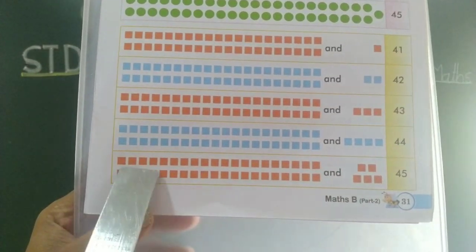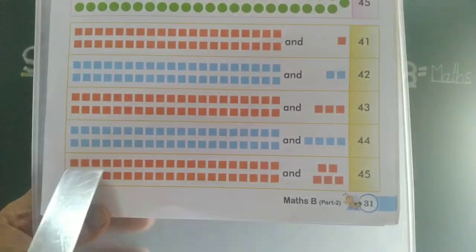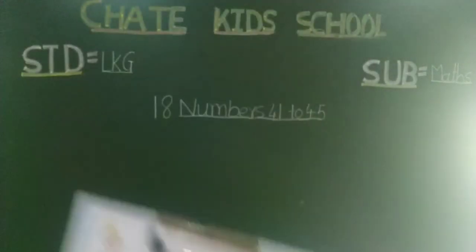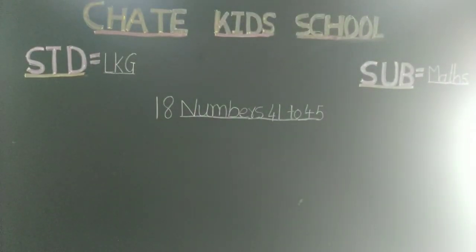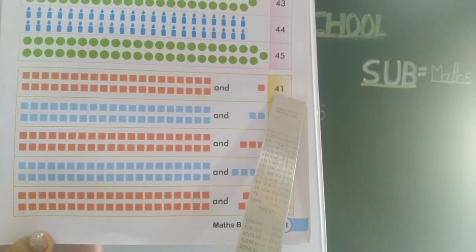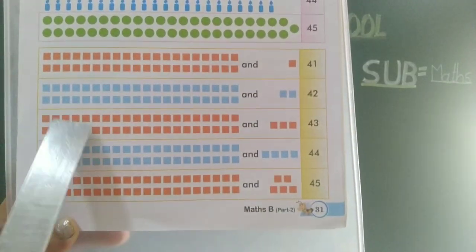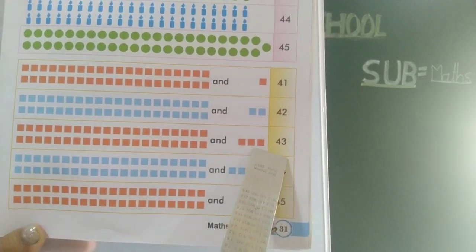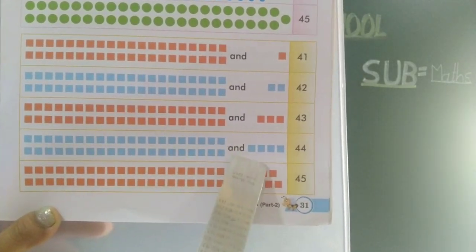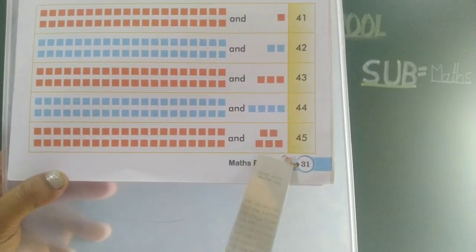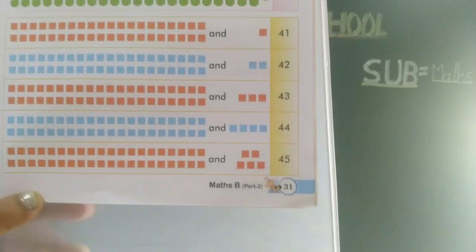Okay, 40 and 1, 2, 3, 4, 5 — 40 and 5, it means 45. Okay. 40 and 1 number add to the number 41. 40 and 2 it means 42. 40 and 3 it means 43. 40 and 4 it means 44. 40 and 5 it means 45. Okay.